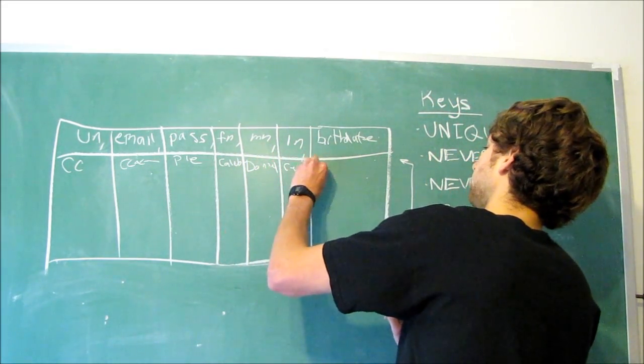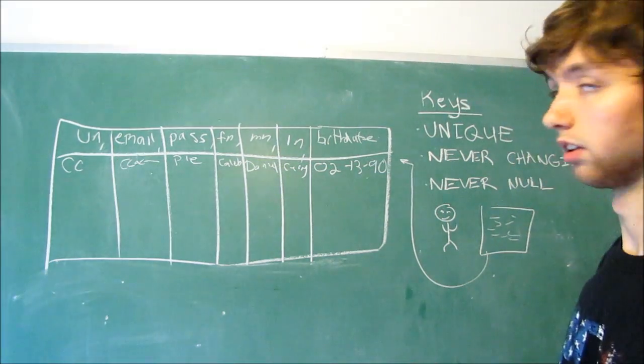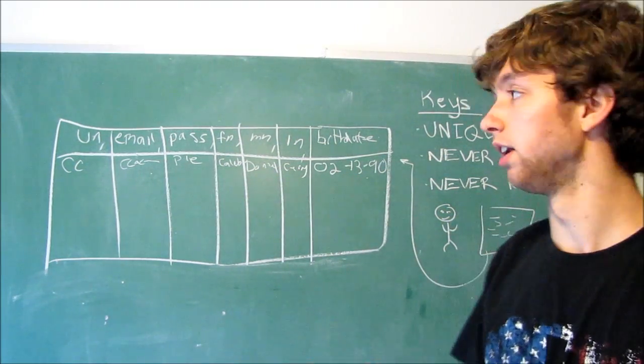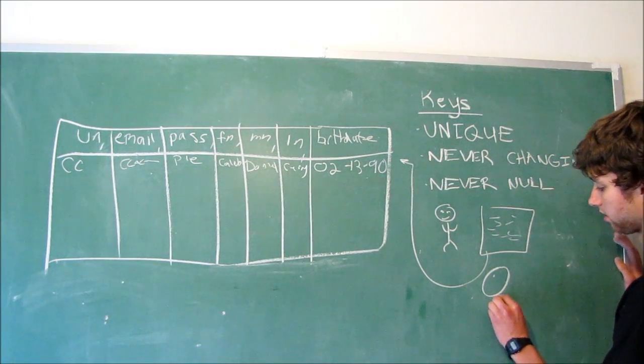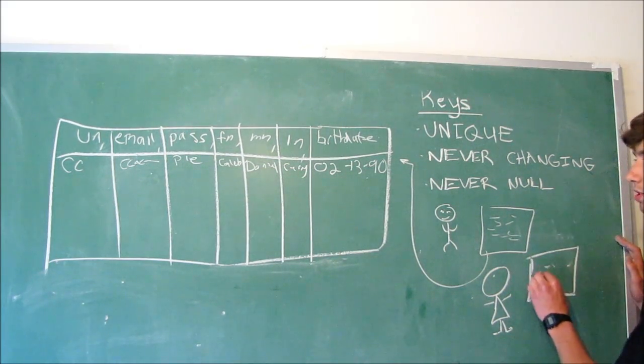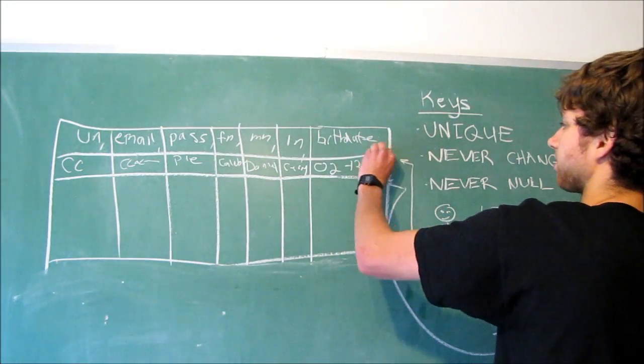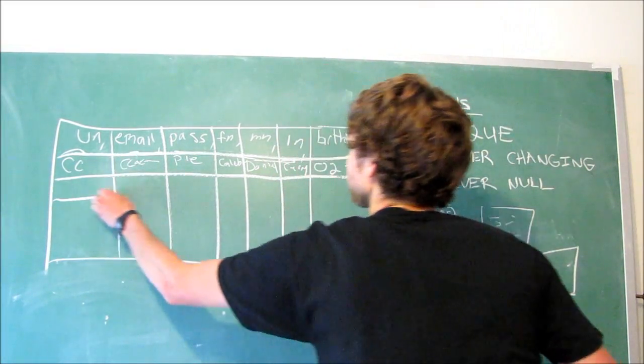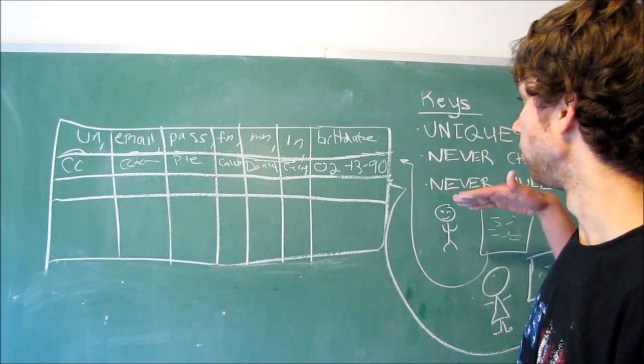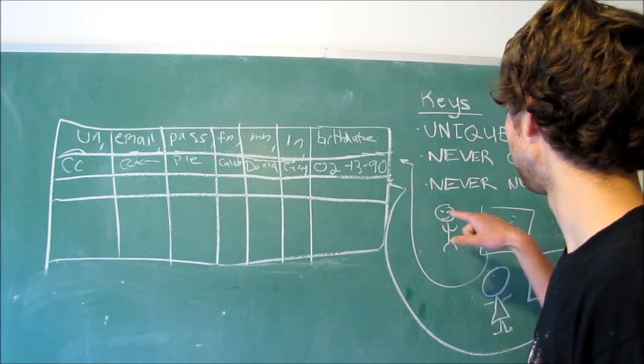So we have a username cc, email cc at blah blah blah dot com, password pi, first name Caleb, middle name Daniel, last name Curry, birthdate 02-13-90. This guy inserted all the information within this database. Now when another person comes, this lady comes and she's like, oh I want to sign up for this website. She signs up and this also goes in the database as a new row.